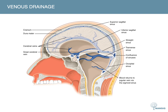Briefly touching on venous drainage: after the brain extracts oxygen and nutrients, blood enters the venous system via cerebral veins, which drain into larger dural venous sinuses. The sinuses also collect cerebrospinal fluid from the subarachnoid space, then drain into the internal jugular vein back to the heart. Clinically, dural venous sinus thrombosis classically presents in a young female with headache, visual disturbance, or stroke-like features of gradual onset, most commonly in the transverse sinus.